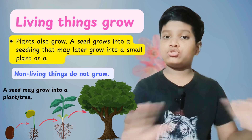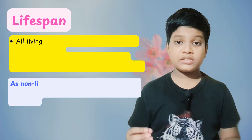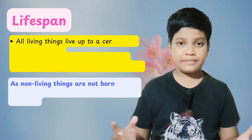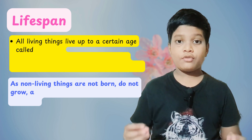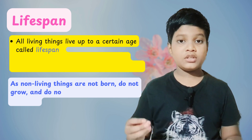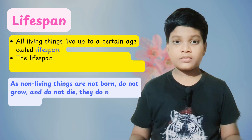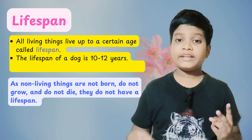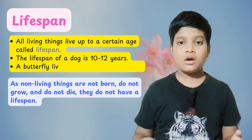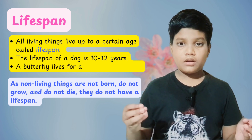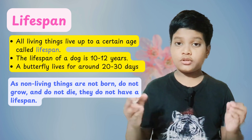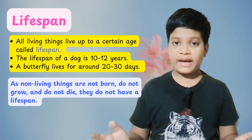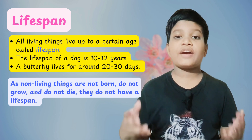Non-living things do not grow. All living things live up to a certain age called a lifespan. The lifespan of a dog is 10 to 12 years. The lifespan of a butterfly is around 20 to 30 days. As non-living things are not born, do not grow, and do not die, they don't have a lifespan.